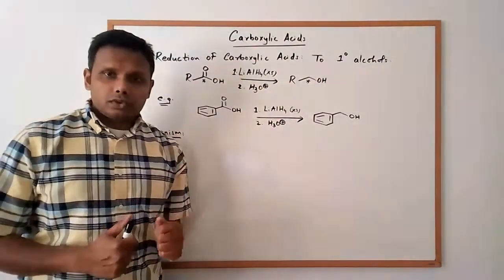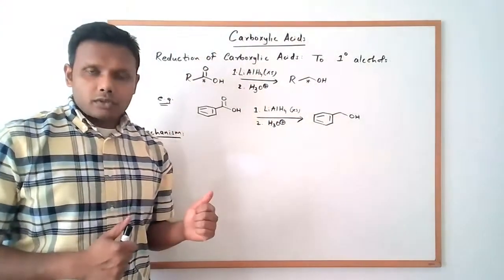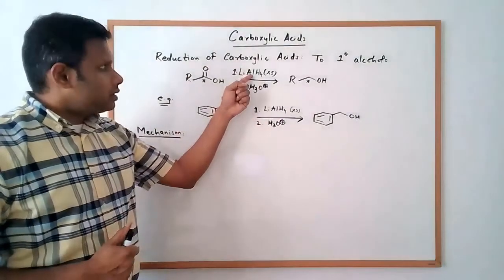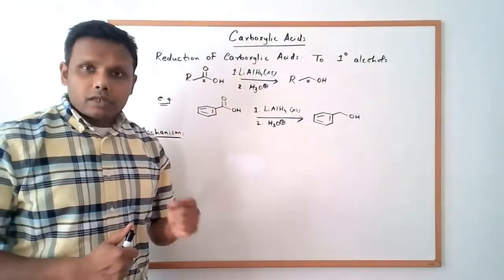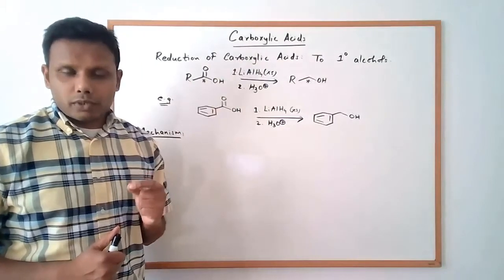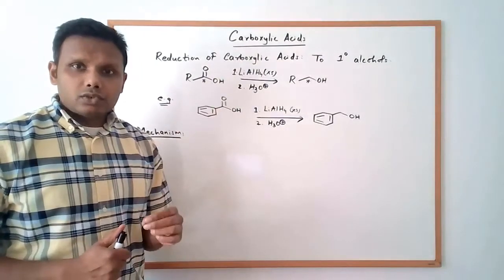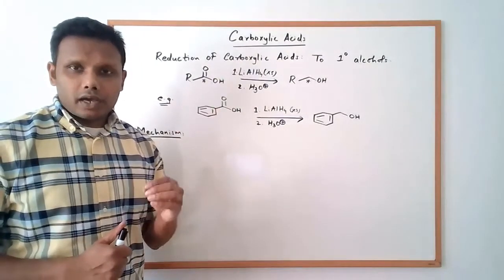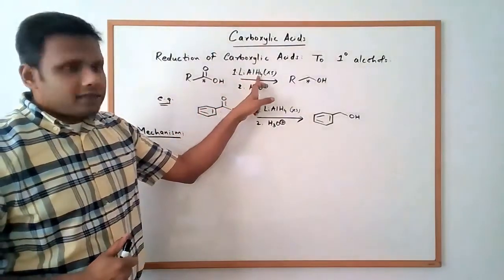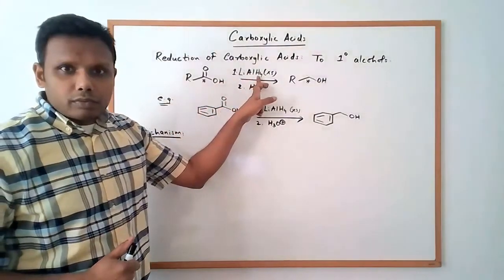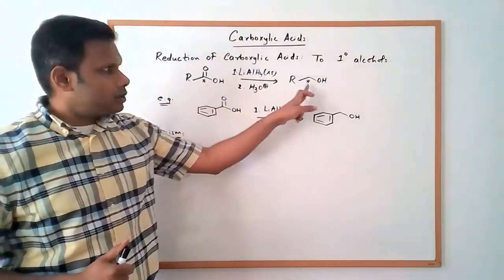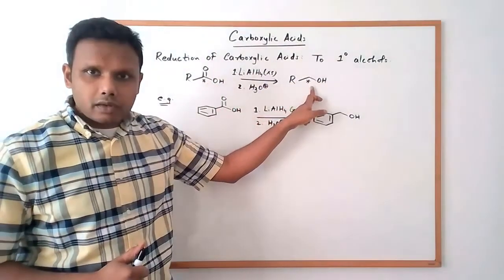The reagent used for reducing the carboxylic acid into the primary alcohol is lithium aluminum hydride. Lithium aluminum hydride is a strong reducing agent — it is a source of hydride ions. In the presence of excess lithium aluminum hydride, a carboxylic acid is converted into the corresponding alcohol.